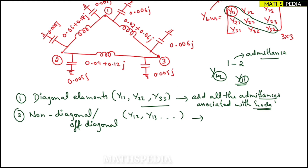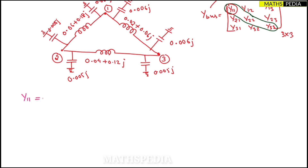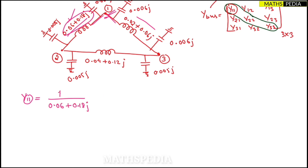Let us evaluate Y11. Node one has two lines connected to it: line one and line two. Convert each impedance to admittance and add. First: one divided by (0.06 + j0.18) for line one. Then add one divided by (0.02 + j0.06) for line two.